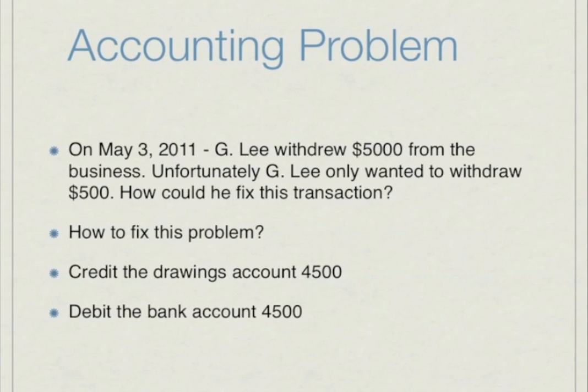Here is an accounting problem. On May 3, 2011, G. Lee (Greg Lee) withdrew $5,000 from the business, but he only wanted to withdraw $500. To fix this problem, he could credit the drawings account $4,500 and debit the bank account $4,500, reversing the excess withdrawal.